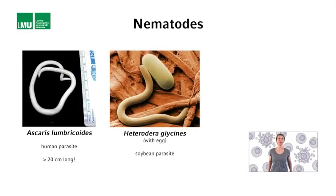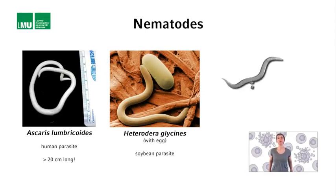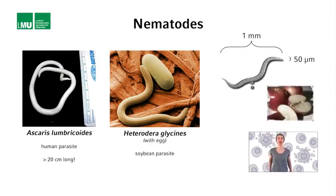Some nematodes can be quite large, and some nematodes are parasites of animals or plants. However, C. elegans is a small, free-living nematode that is completely harmless. It's about one millimeter long and about 50 micrometers wide, and it lives in rich organic matter, such as rotting apples in an orchard.